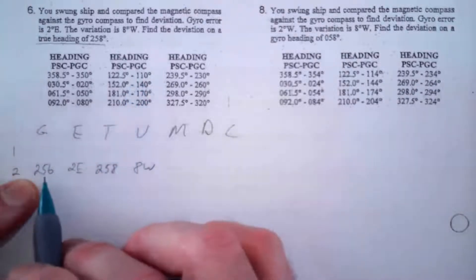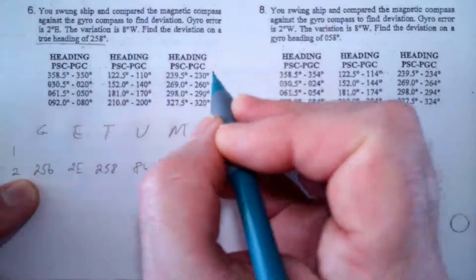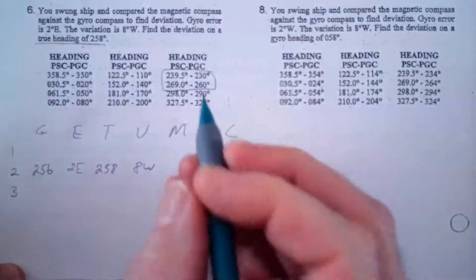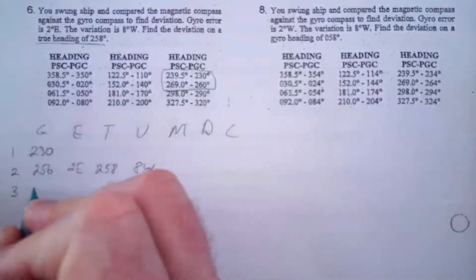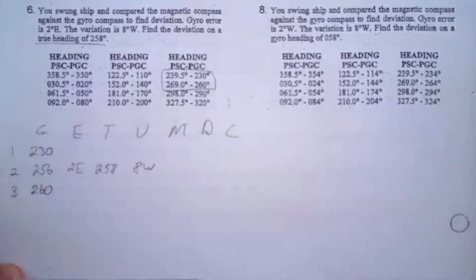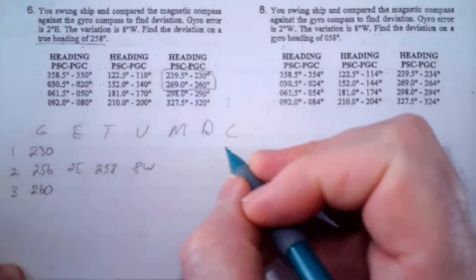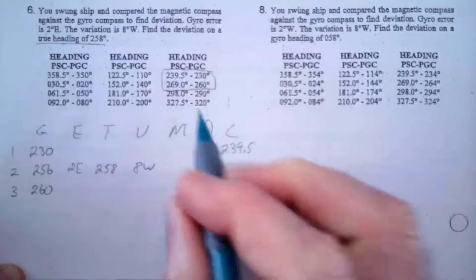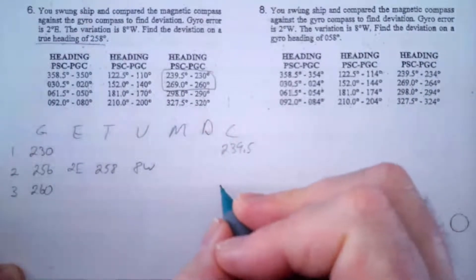Now that I have the gyro I can look in the gyro column and I'm going to look for something that straddles 256. So it's right here, these are my pairs of data. The PGC is 230, 260, so the 230 I'm going to put up here, the 260 I'm going to put there. The PSC I'm going to put here, 239.5, and the 269 is going to go down here.